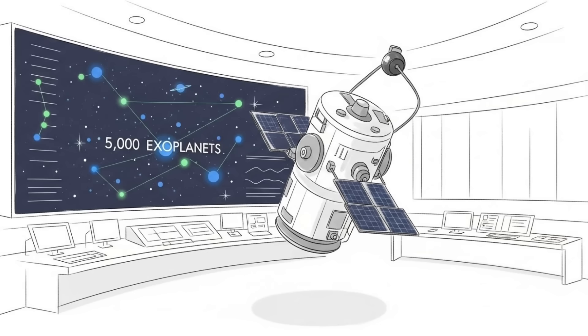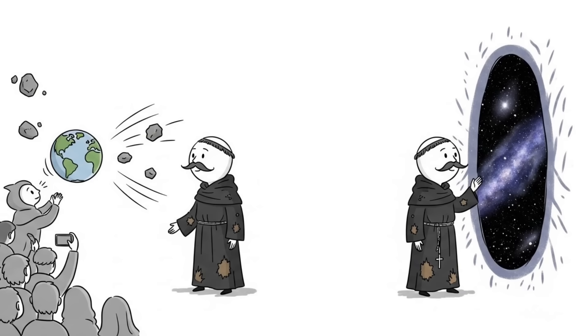Today, the Kepler Space Telescope has confirmed over 5,000 exoplanets around other stars exactly like he described. He wasn't a rebel. He was just looking at a bigger picture than everyone else was ready to see.